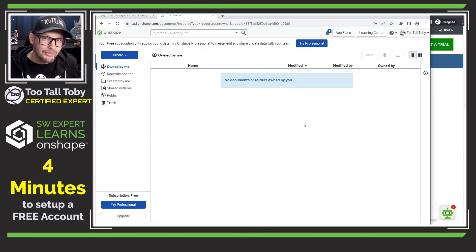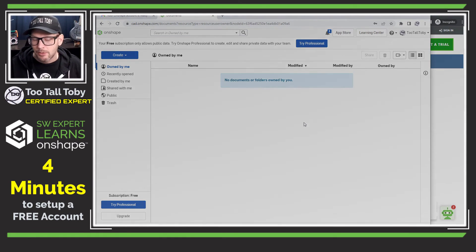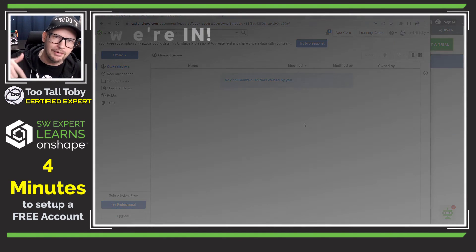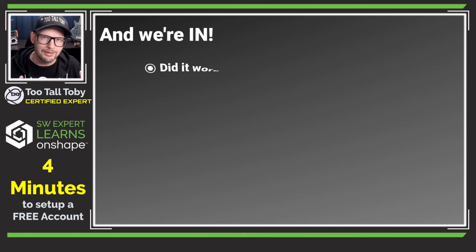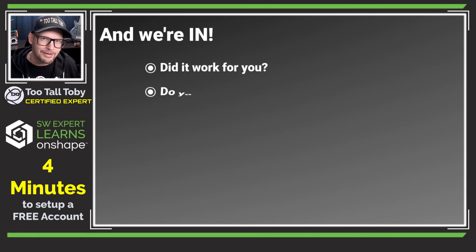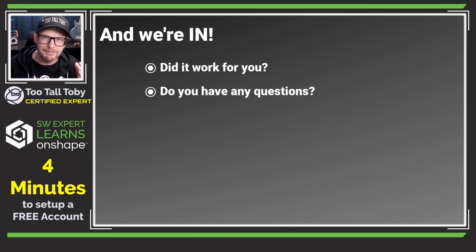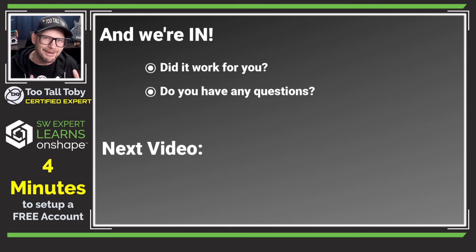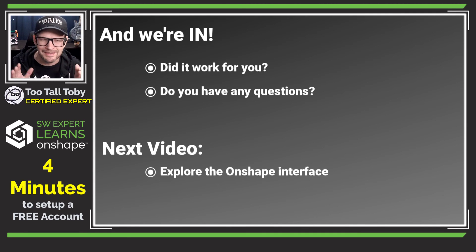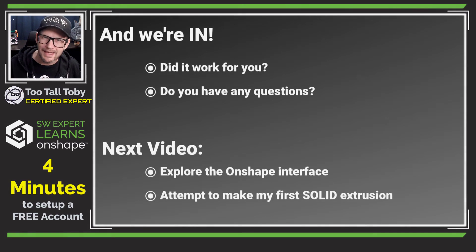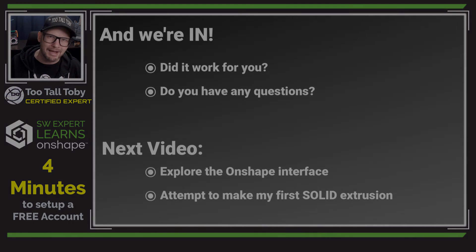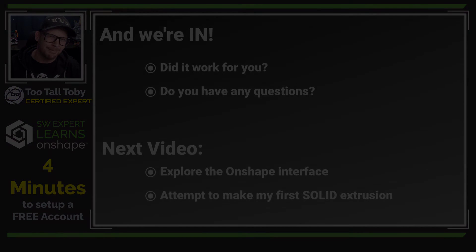All right, that was pretty easy. I was able to get in there and create that account. Everything went really smoothly for me, but let me know down in the comments how it went for you. Are you following along with this series? Did everything go smoothly or did you run into a hiccup? If you have a question, let me know in the comments and I'll be sure to get you an answer. I'm very excited to jump into the Onshape interface to see what's going on in there, and I'm going to do that in the next video. So be sure to like, subscribe, and come on back for the next episode. I will see everybody there.